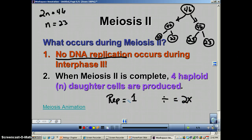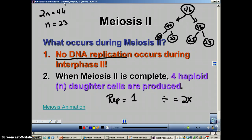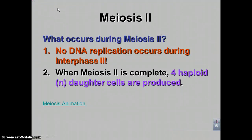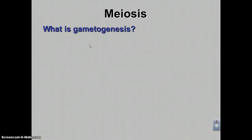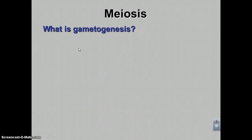The number one thing to remember is that in meiosis one and meiosis two, you replicate once and divide twice. We're going to stop right there and pick up gametogenesis in podcast number four.